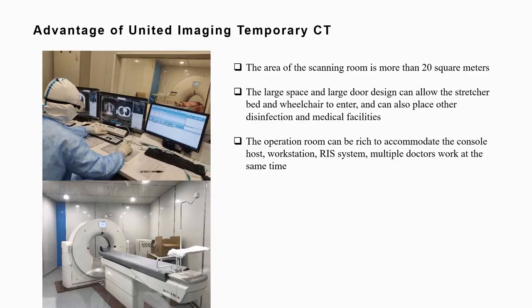This temporary CT from United Images has a very large scanning room of more than 20 square meters. It has a large door, which means that a stretcher bed or wheelchair can enter the scanning room — very important for critically ill patients who are not able to move freely. The huge space also makes it possible to place other disinfection or medical facilities. The operation room is also very large and has many devices such as the workstation, allowing multiple medical staff to work at the same time, making clinical work very efficient.